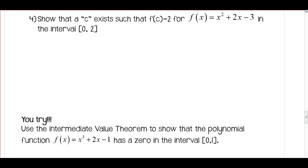For number 4, we want to show that a c exists such that f(c) equals 2 for the polynomial f(x) = x² + 2x - 3 in the interval from 0 to 2.